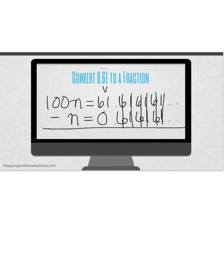Notice all of this cancels off. There's nothing after my decimal. I can simply subtract now. 61 minus 0 leaves 61 on the right hand side and 100n minus a single n will leave me 99n on the left side of my equal sign.